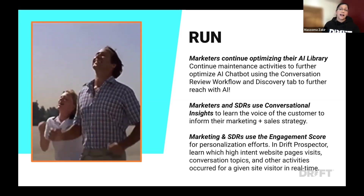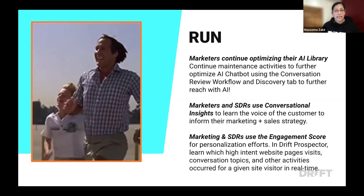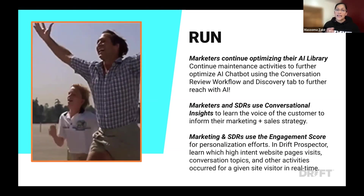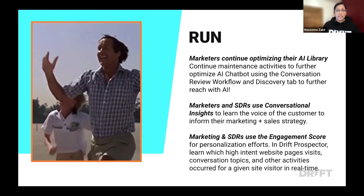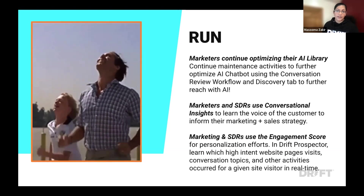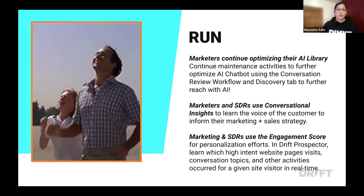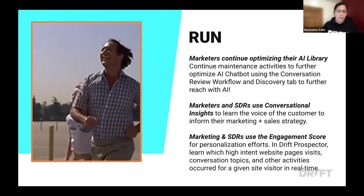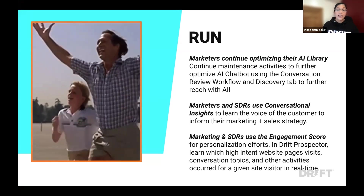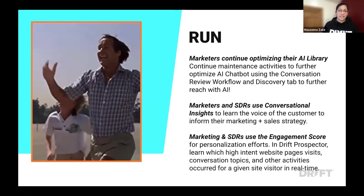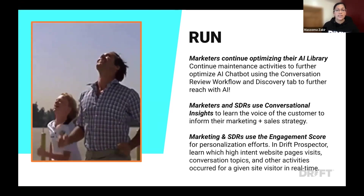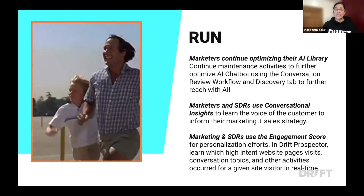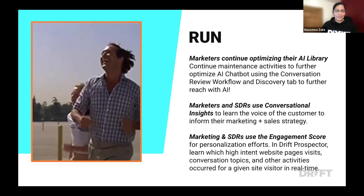In the run phase, Justin continues to optimize his AI library, reviews AI conversations, and checks the discovery tab weekly for new topics. Now he's also using Conversational Insights to learn the voice of his customer across all conversations — using AI insights to learn what's happening and inform his marketing and sales strategy. He also partners with Phoebe, the SDR, to use the engagement score for personalization via Drift Prospector, identifying high-intent page visits, conversation topics, and other activities in real time.